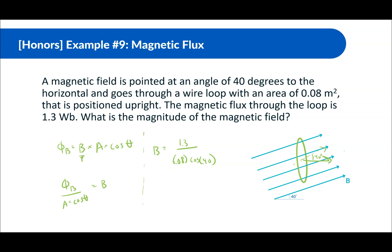So now let's just put this into our calculator, 1.3 divided by 0.08 times cosine 40, and we get 21.21 Tesla. All right.